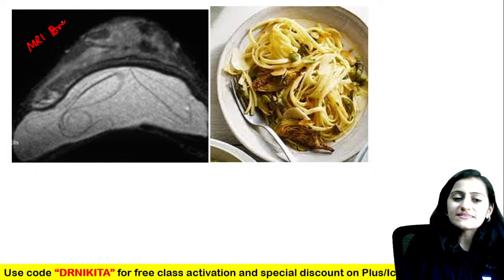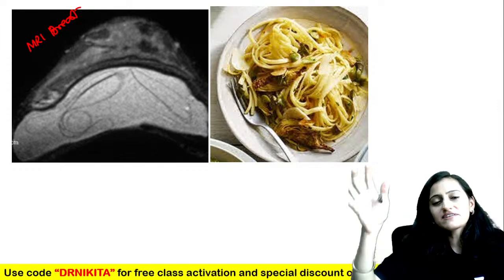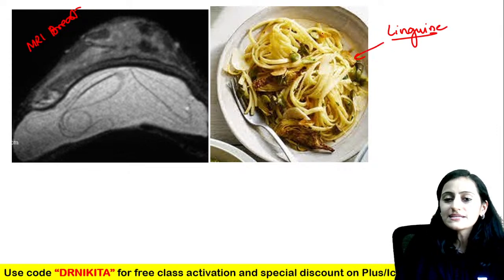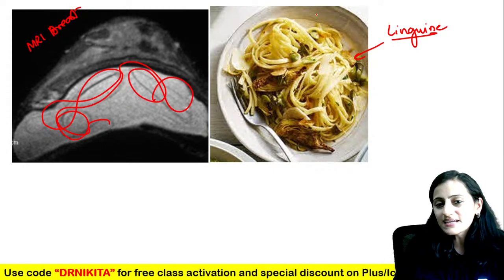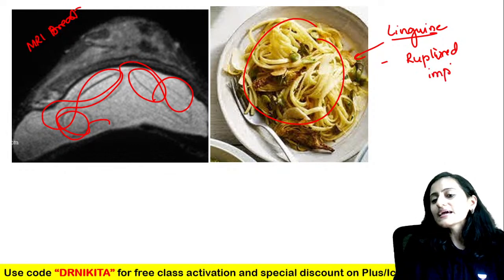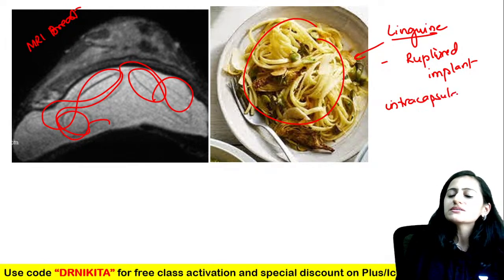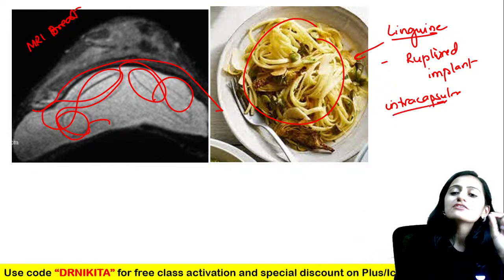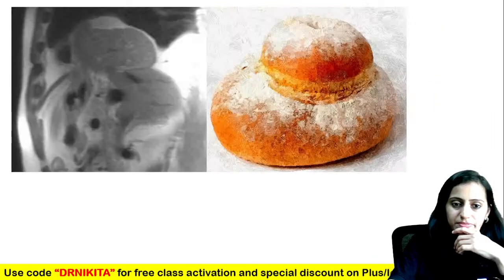The linguine sign — linguine is flat pasta, and you see a membrane like linguine in the breast. This is seen with ruptured breast implant — specifically intracapsular rupture, where it is still contained within the capsule. The linguine sign equals intracapsular rupture of the breast implant.